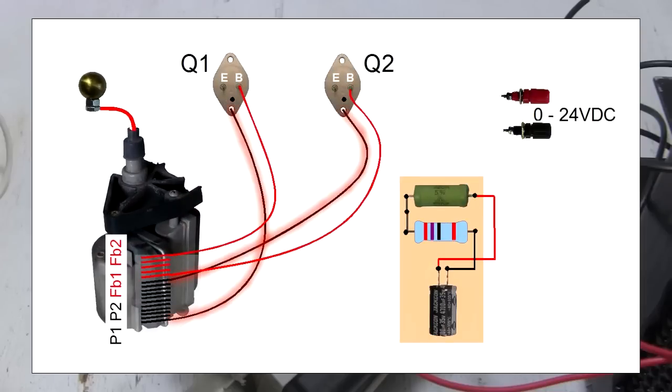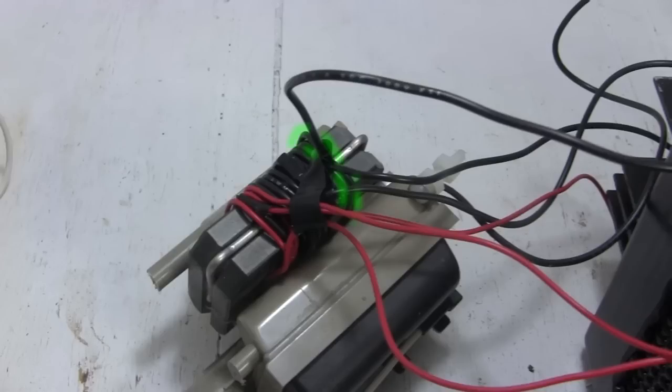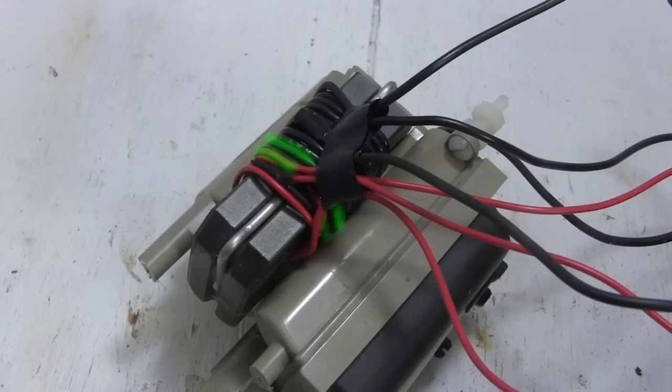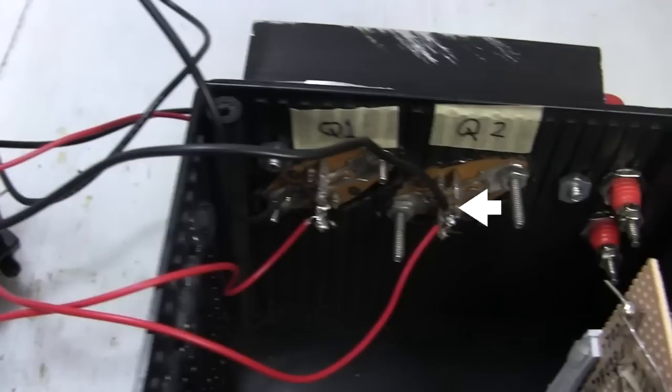Then I did the transistor's collectors, which go to the black coils I'd put on the flyback. I connected the black wire on the outside of the coil to transistor Q1's collector. Then I connected the black wire on the inside to transistor Q2's collector.